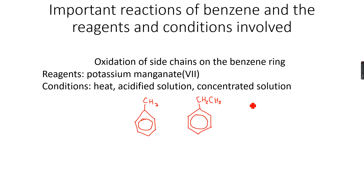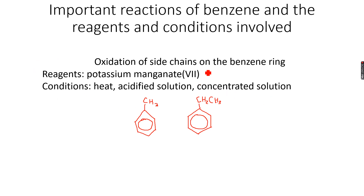We can have propyl benzene, butyl benzene, pentyl benzene and so on. I want to oxidize the side chains. We use potassium manganate (KMnO4) as the reagent — a very strong oxidizing agent. The conditions are a concentrated solution of KMnO4, acidified, and heated.